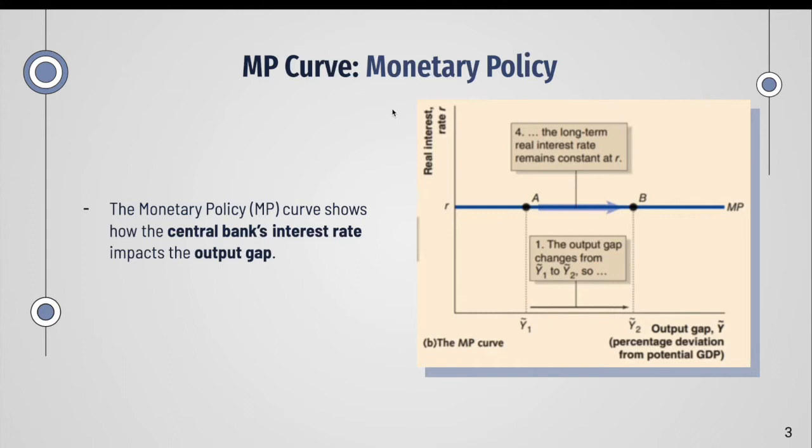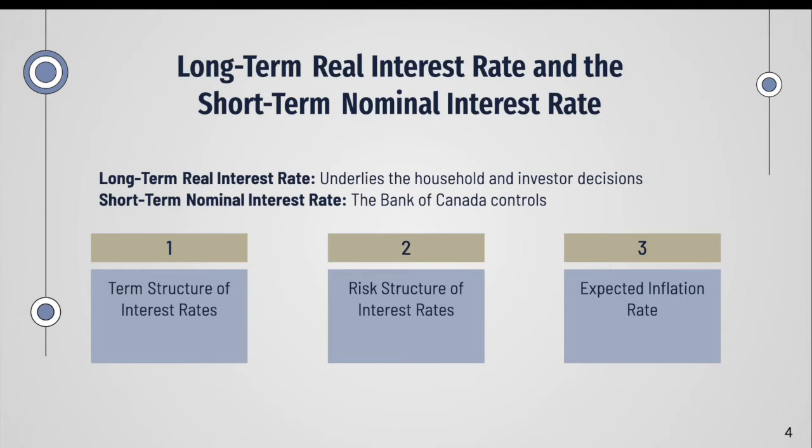Now we can talk about the long-term real interest rate, which underlies household and investor decisions, and the short-term nominal interest rate that the Bank of Canada controls. The relationship between these depends on three factors: the term structure of interest rates, the risk structure of interest rates, and the expected inflation rate.